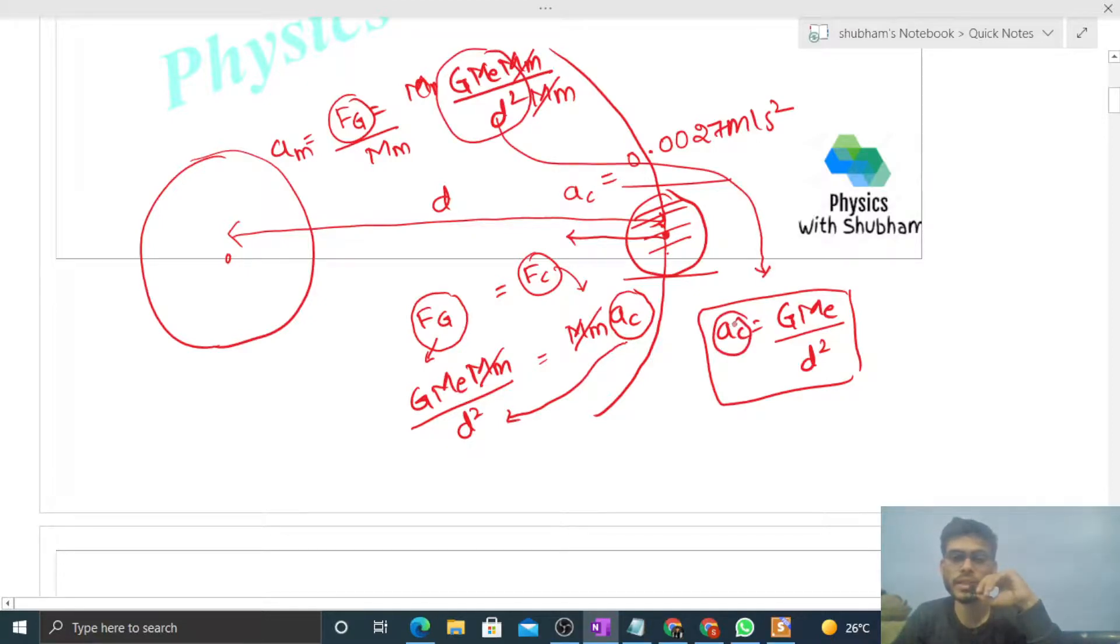Check how much you're getting: GME by D squared, whose value equals the centripetal acceleration. So the acceleration with which the moon will move towards the earth is the same as the centripetal acceleration.